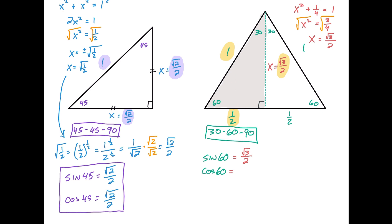Cosine of 60 is the adjacent side over the hypotenuse — 1/2 over 1 — so that equals 1/2. So here are two more trig ratios for the 60-degree angle.